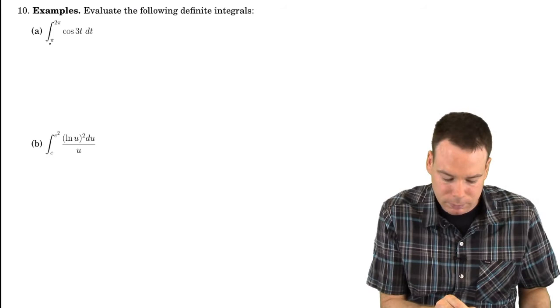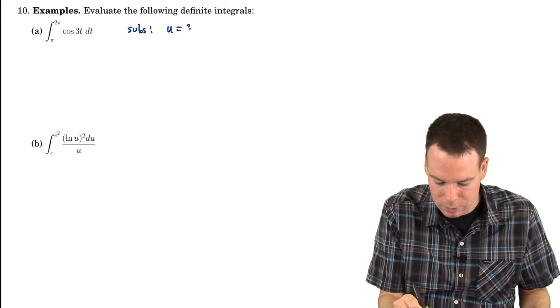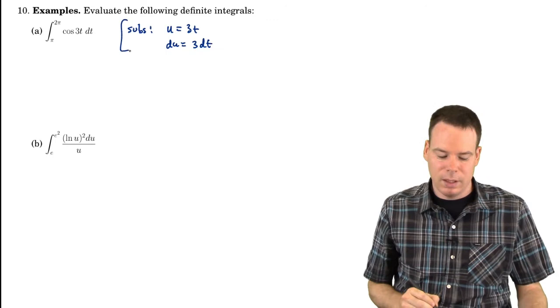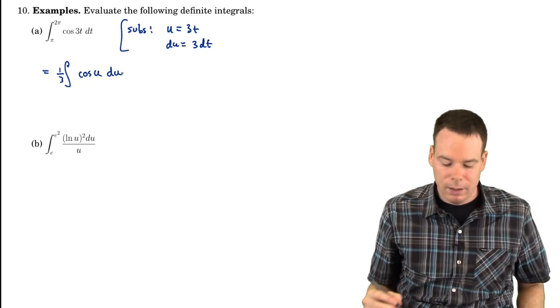So let's have a look at some examples. Let's evaluate the following definite integrals. Again, this is very similar to one we just looked at where we computed the indefinite integral. We're going to substitute u is equal to 3t, du is equal to 3dt. At this stage, we get that this is equal to the integral of cos of u, and then 1 third du.